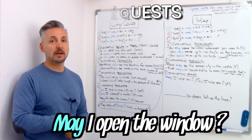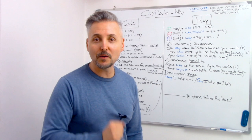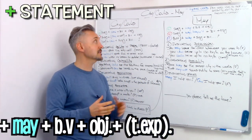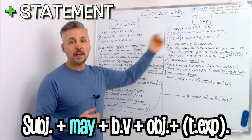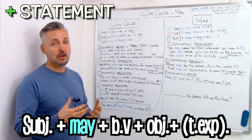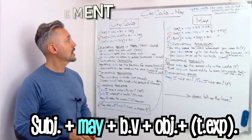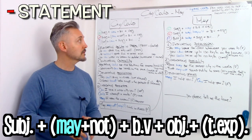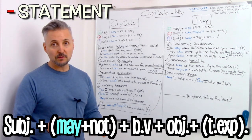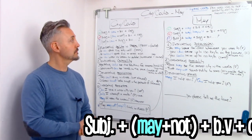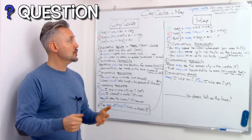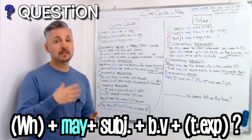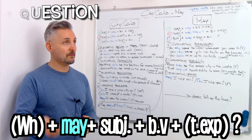Now let's look at may. For a positive sentence, you use the subject, then may, then the base of the verb, and then the object — remember, without 'to'. For negative statements: subject plus may not or mayn't, plus the base of the verb without 'to', plus the object. For an interrogative sentence, you use a wh- question word, plus may, plus the subject, plus the base of the verb, etc.